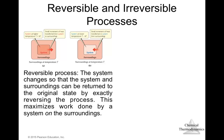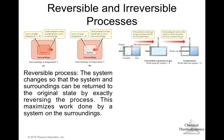In a reversible process, the system changes so that both the system and surroundings can be returned to their original state by exactly reversing the process. This maximizes the work done by the system on the surroundings. Since no factors around the process have been altered, you can return to the original state by exactly reversing all the steps.